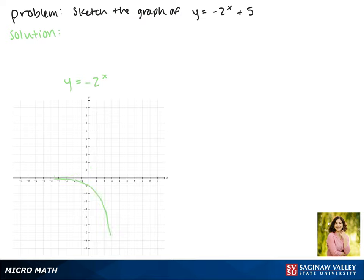The negative out front reflects it across the x-axis. Then the plus 5 at the end gives us a vertical shift of 5.